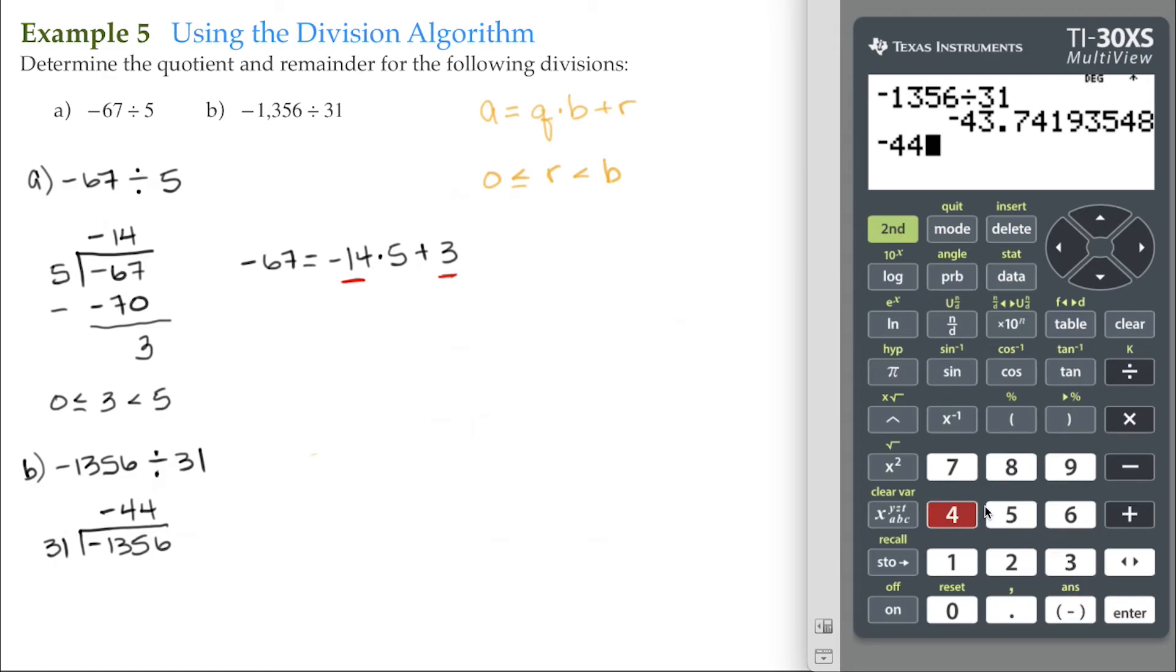Negative 44 times 31 equals negative 1,364. Don't forget we subtract. Negative 1,356 minus negative 1,364 is the same as negative 1,356 plus 1,364, which gives us 8.